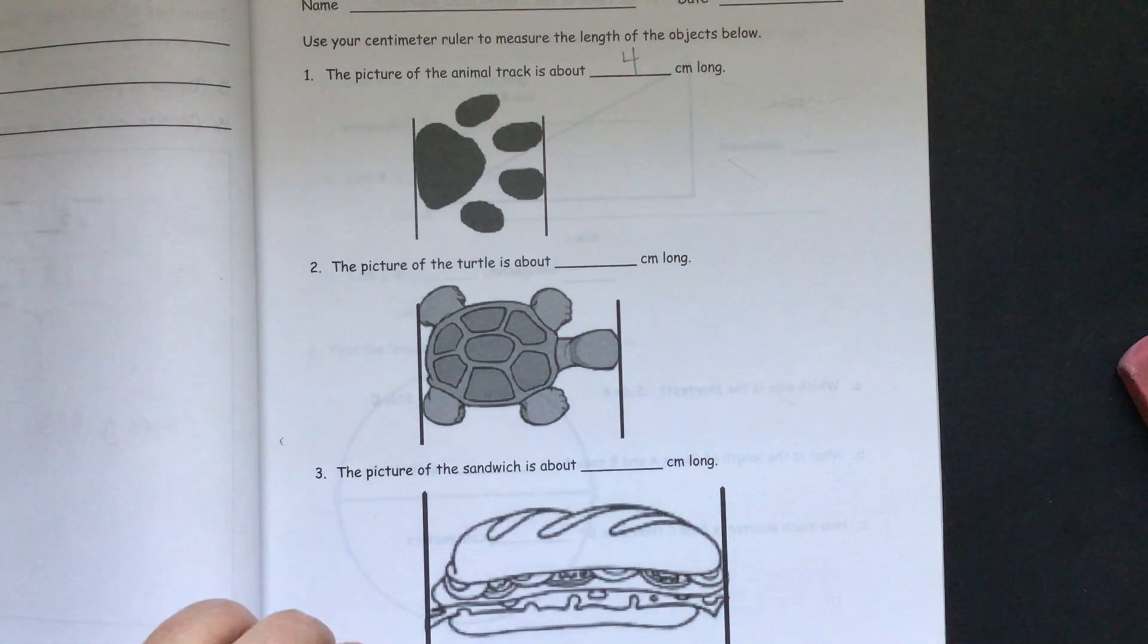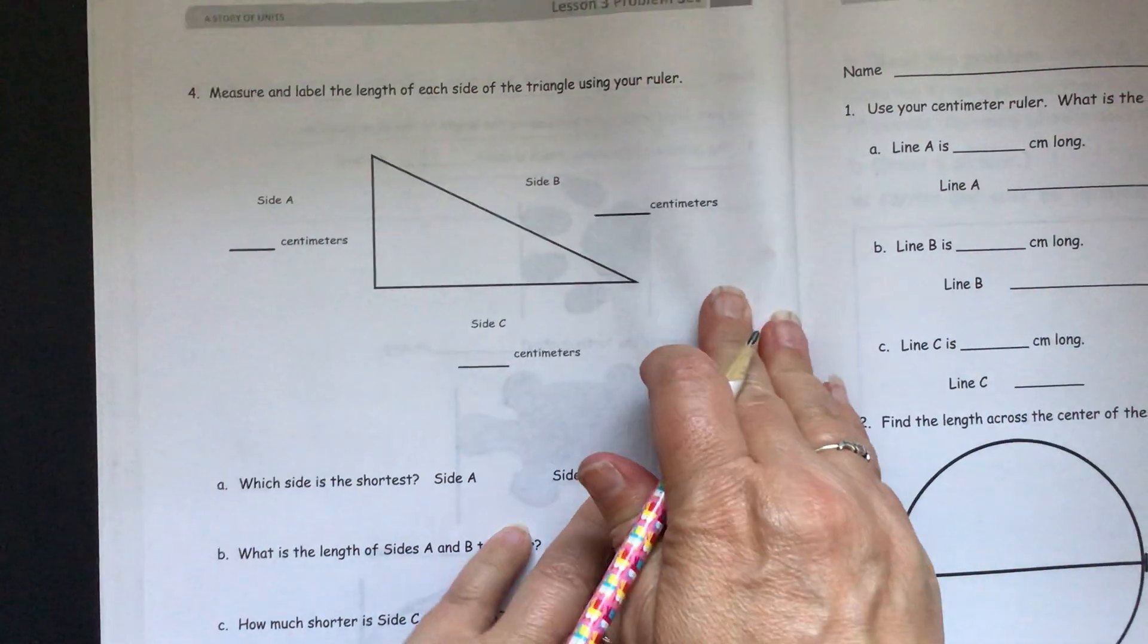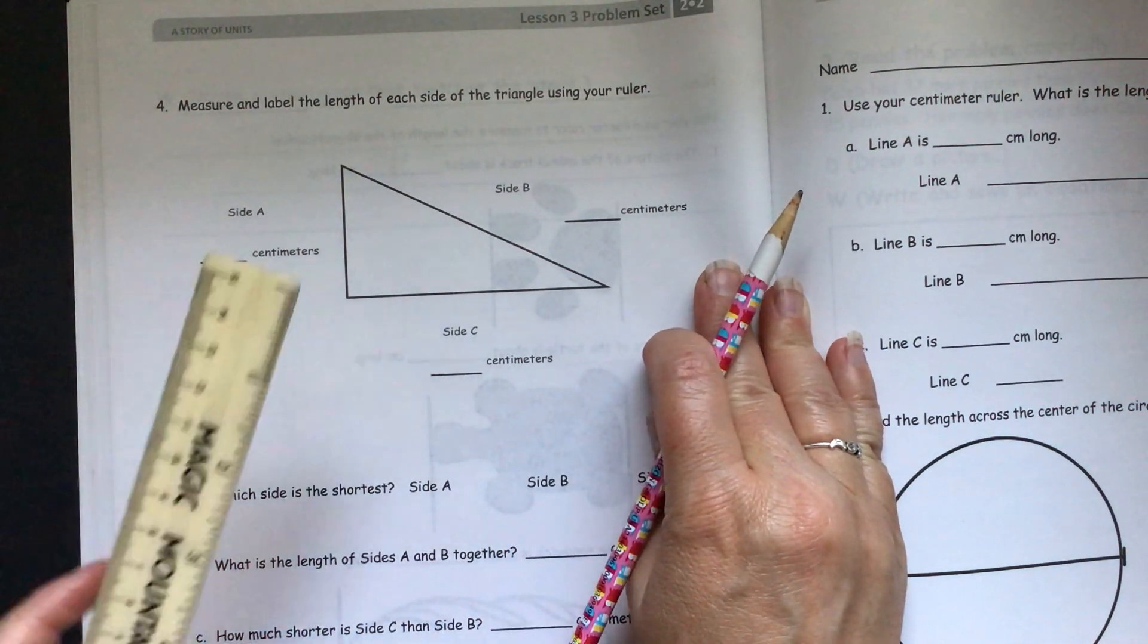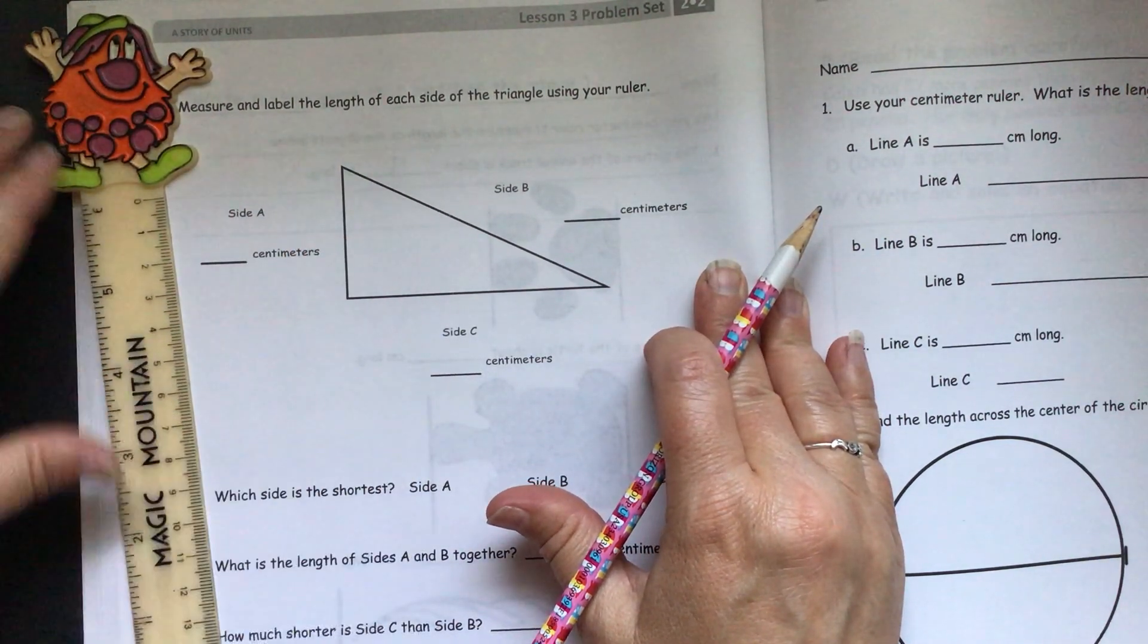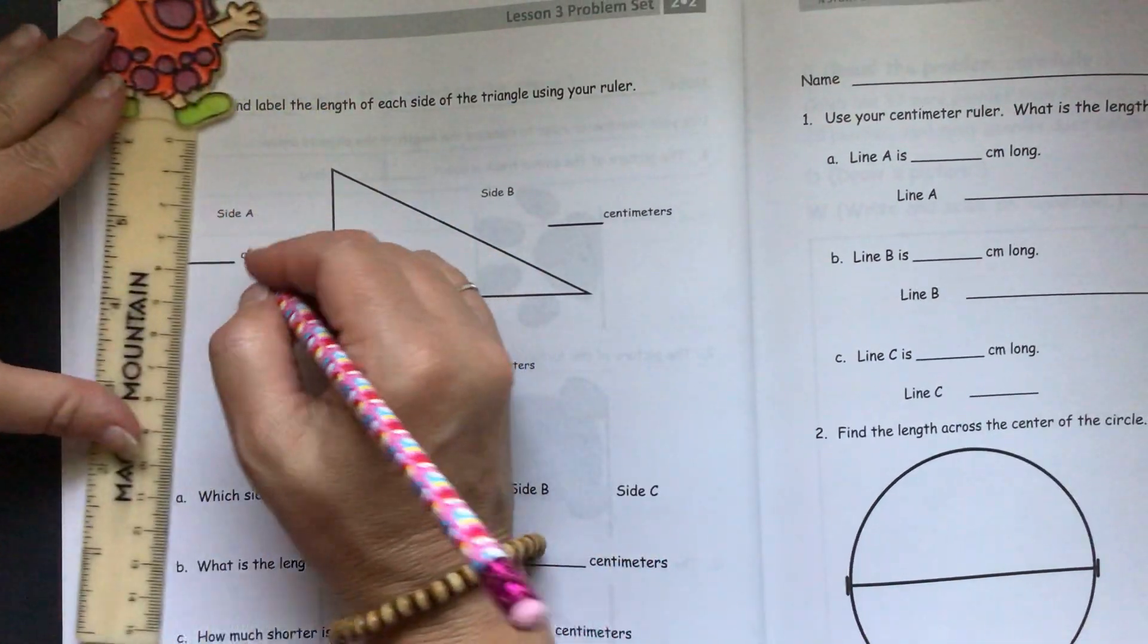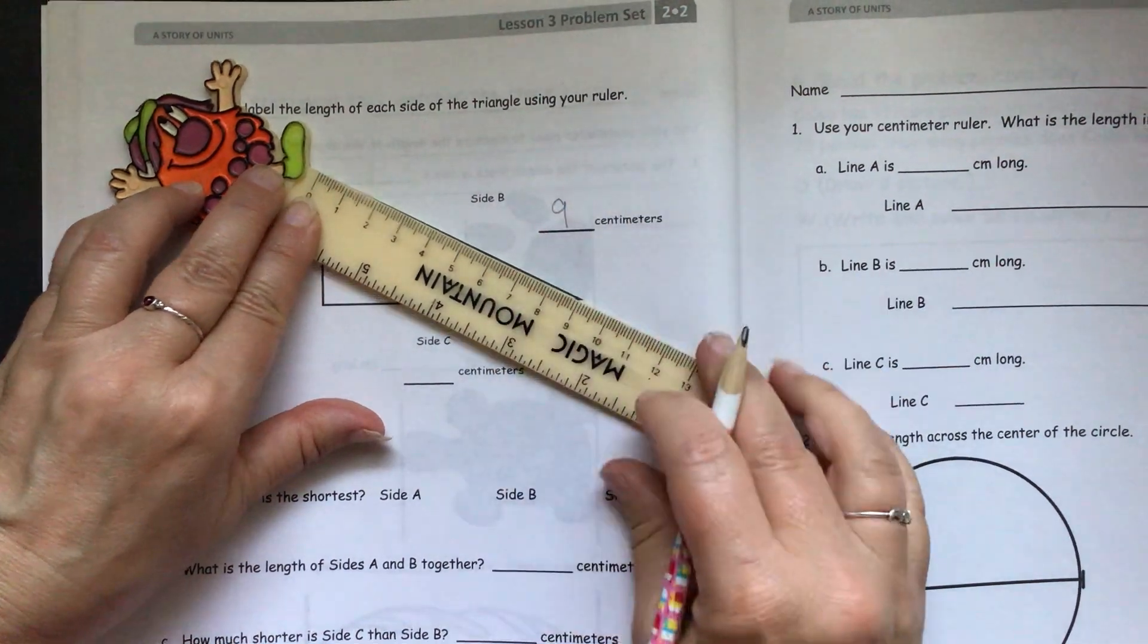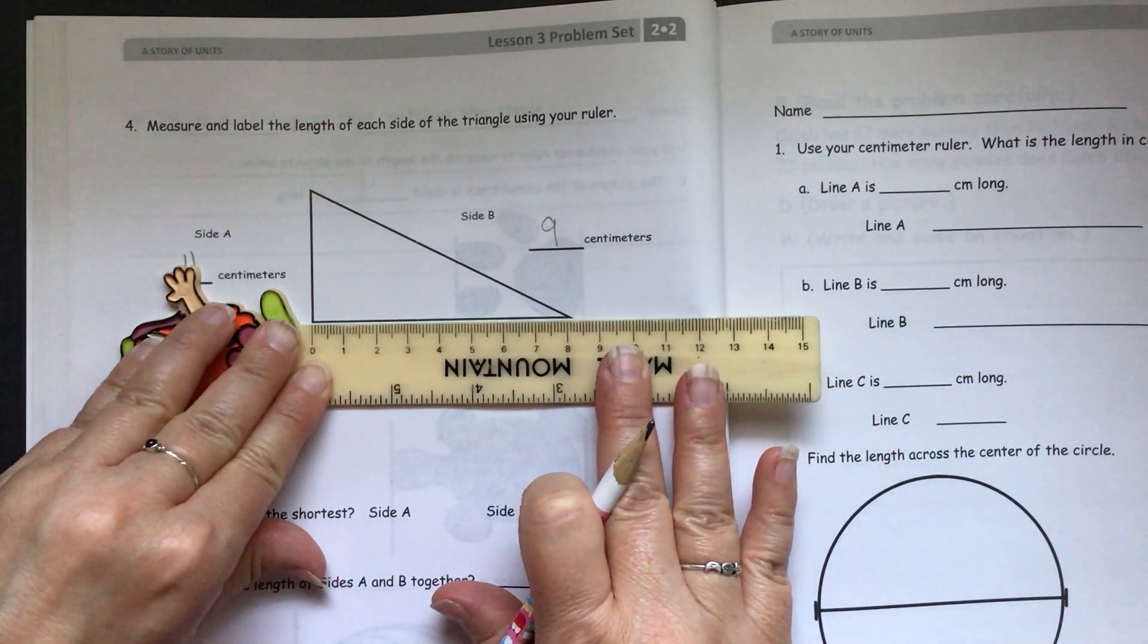So we are turning the page. And it says, measure and label the length of each side of the triangle using your ruler. Remember we're doing our centimeter side. Here's side A. So, this is side A here. So, we'll measure. We have starting at a zero, and we go down, and it's four centimeters long. And our B side is nine centimeters long. And our C side is eight centimeters long.